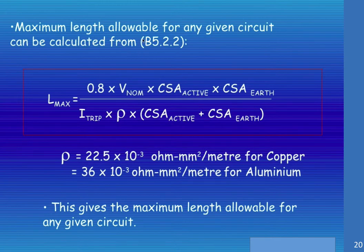The maximum allowable length for a given circuit can be calculated from table B5.2.2, and the formula may look involved but it's not that difficult. Our maximum length is 0.8 times the nominal voltage. There's our 80%, that 0.8 is our 80%. Multiply by the cross-sectional area of the active, multiply by the cross-sectional area of the earth.